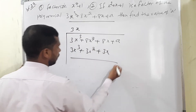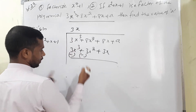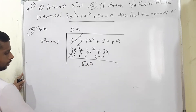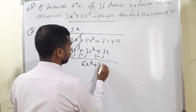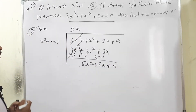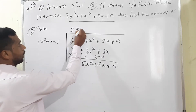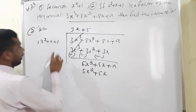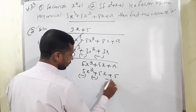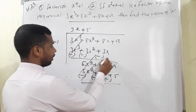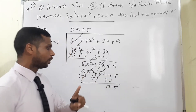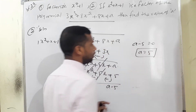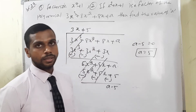Subtracting: (8x²-3x²)=5x², (8x-3x)=5x, remainder +a. Next, 5×(x²+x+1) = 5x²+5x+5. Subtracting again: 5x²-5x²=0, 5x-5x=0, remainder = a-5. By the remainder theorem, since x²+x+1 is a factor, a-5 = 0, therefore a = 5.